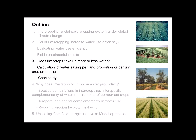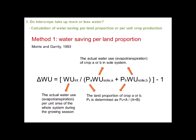The second thing we are examining is: does intercropping take up more or less water? To calculate delta water use, we have two methods. The first is water saving per land proportion, where delta W means delta water use, W_int means actual water use per unit area of the whole system during the growing season, and W_sole_A and W_sole_B mean the actual water use of crop A or B in sole crop systems.